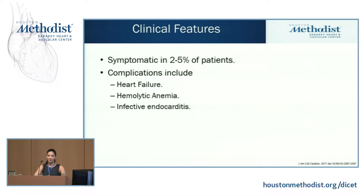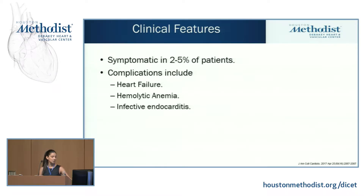PVLs are usually asymptomatic and only symptomatic in up to 5% of the population. Features include heart failure — patients presenting with shortness of breath, lower extremity edema, and fluid overload symptoms. Hemolytic anemia is another clinical feature, and some patients require repeated blood transfusions, so it's important to order labs like LDH, haptoglobin, and reticulocyte counts. The last complication includes infective endocarditis.